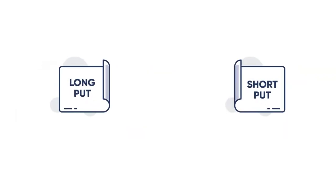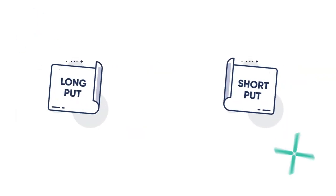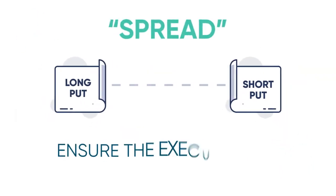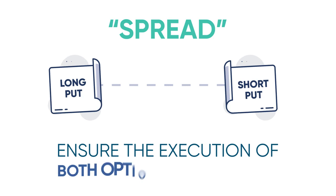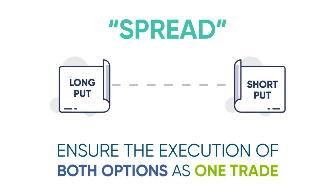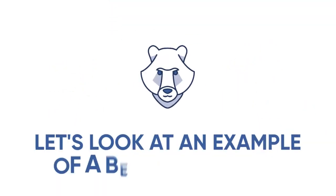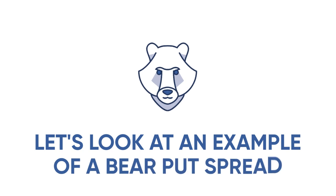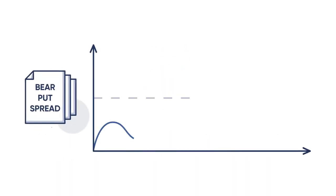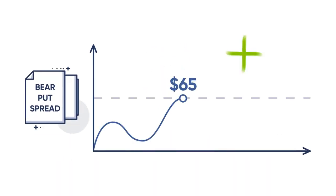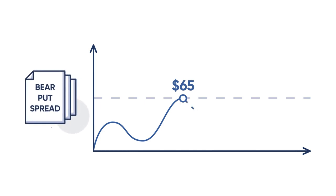It's most favorable that you place the trade as a spread order to ensure the execution of both options as one trade. Let's look at an example of a bear put spread. XYZ stock is currently trading for $65 per share and you think it's poised for a drop in price.